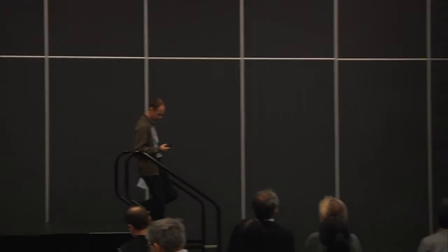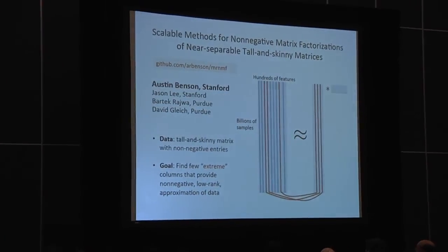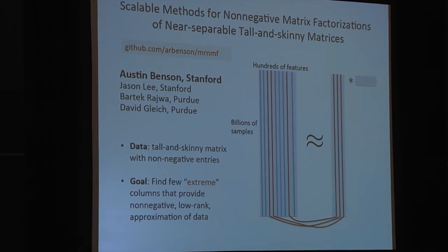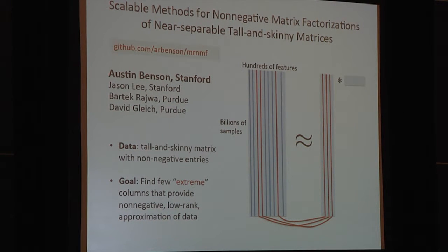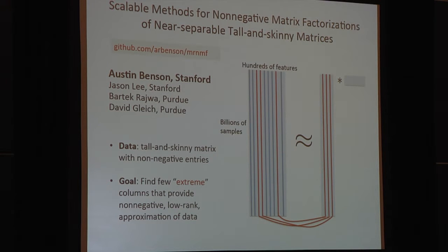Finally, we have Austin Benson, who is going to talk about scalable methods for non-negative matrix factorization. This is joint work with my fellow student Jason Lee and with Bartek Rajwa and David Gleick from Purdue. We are interested in scaling up non-negative matrix factorizations, particularly in the domain where the matrix has many more rows than columns — what we call tall and skinny matrices — and also in the domain of separable matrix factorizations. We are looking to find a few columns of a non-negative matrix that represent the data in a non-negative way, finding extreme columns in some interpolation matrix such that combined they provide a non-negative low-rank factorization.